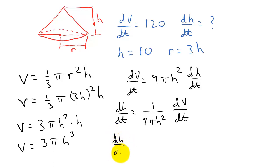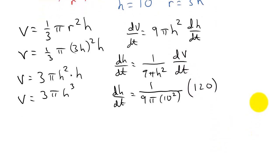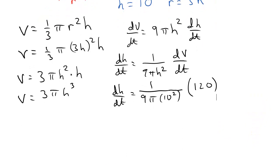So I get dh dt is one over nine pi times h squared. So that's times ten squared times dv dt times 120.